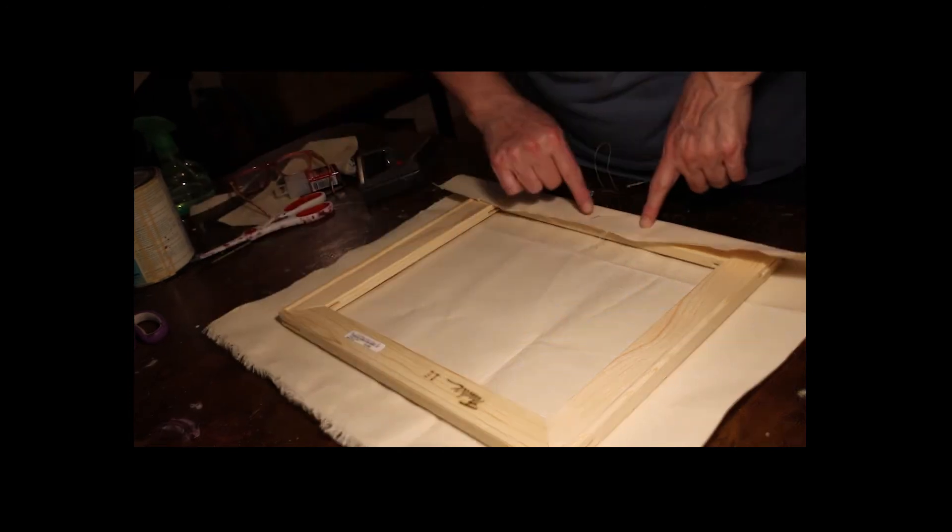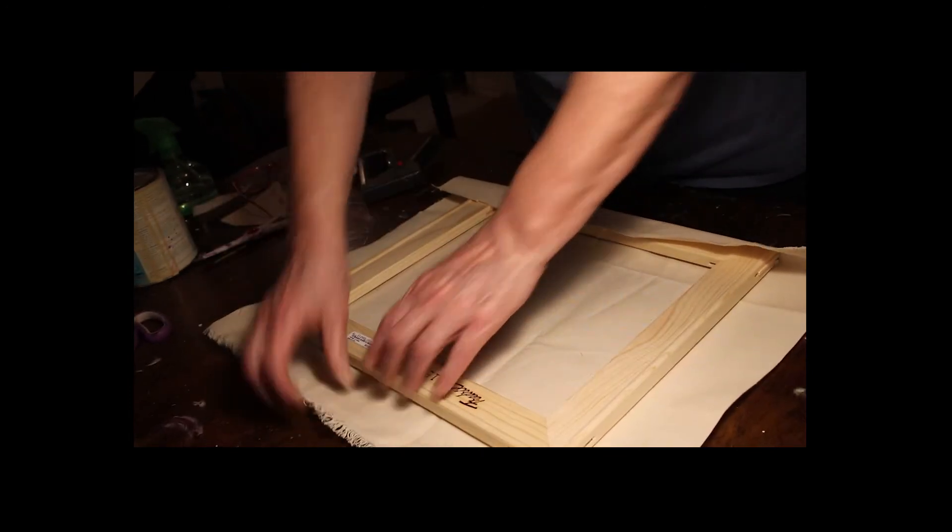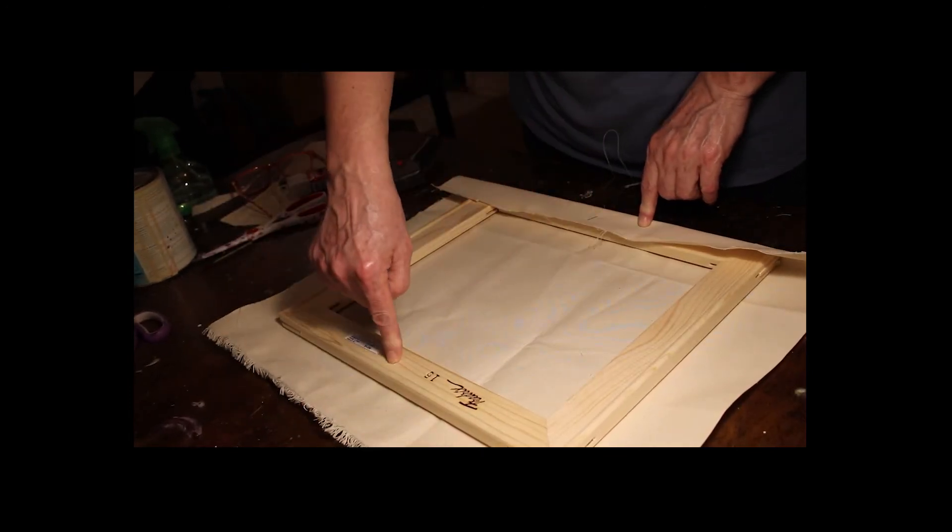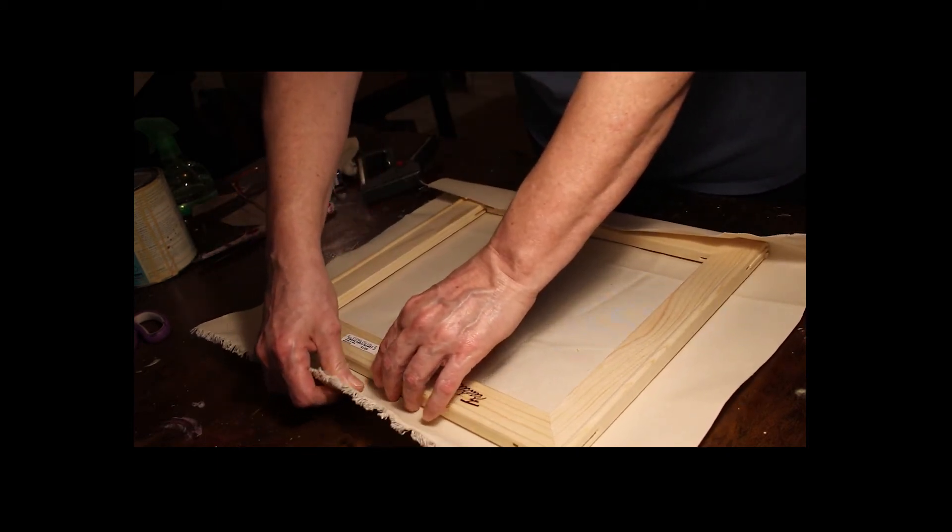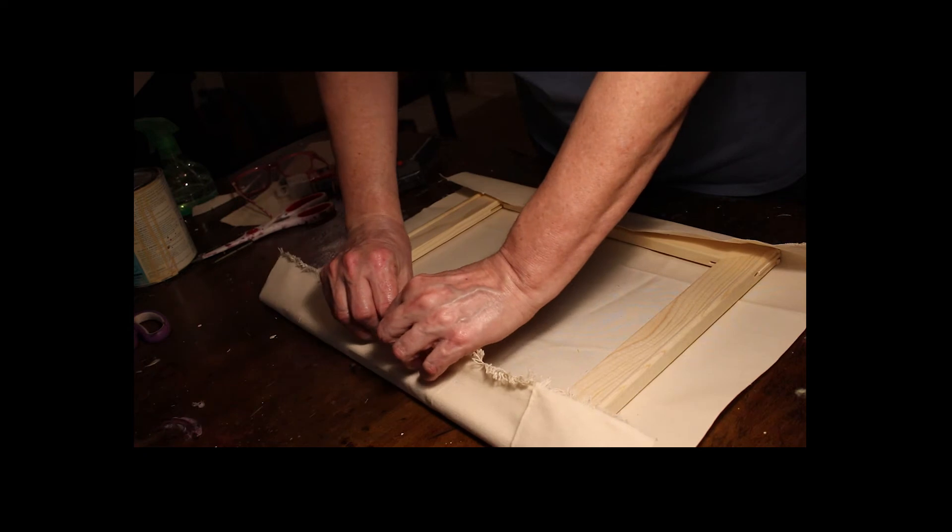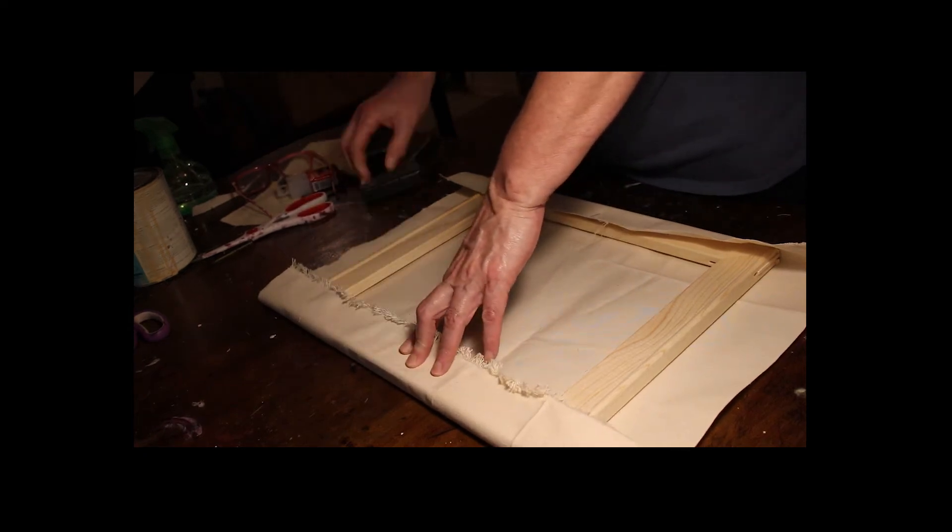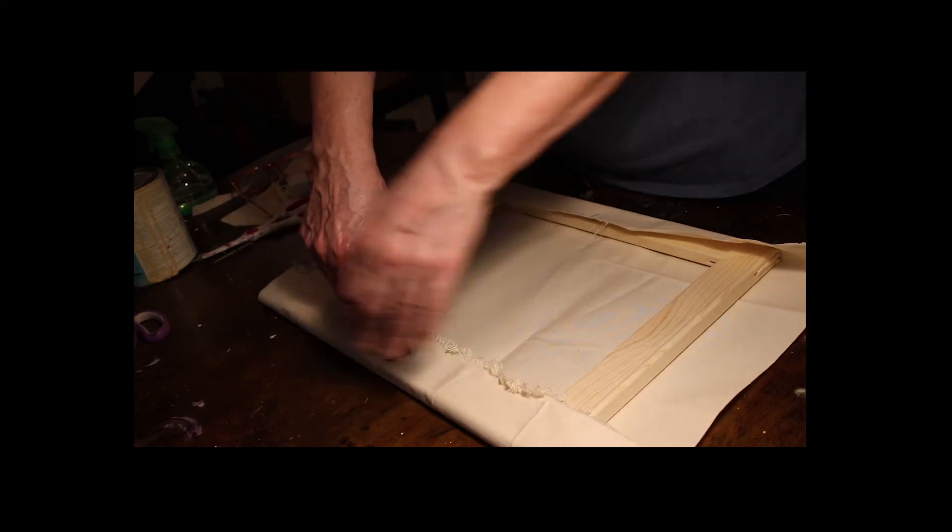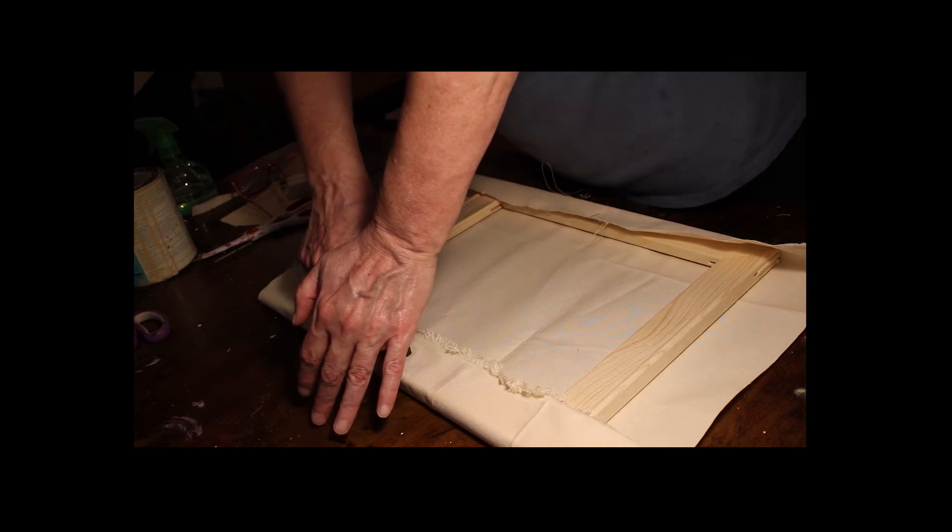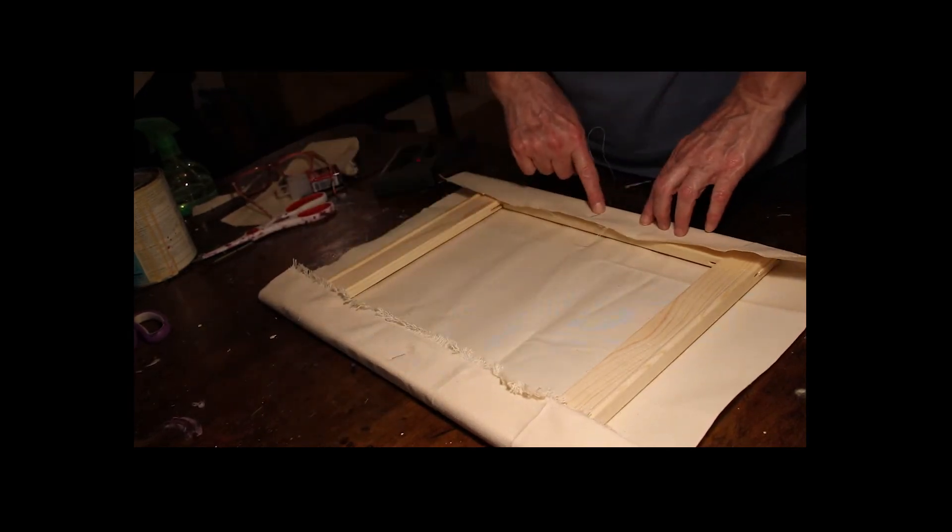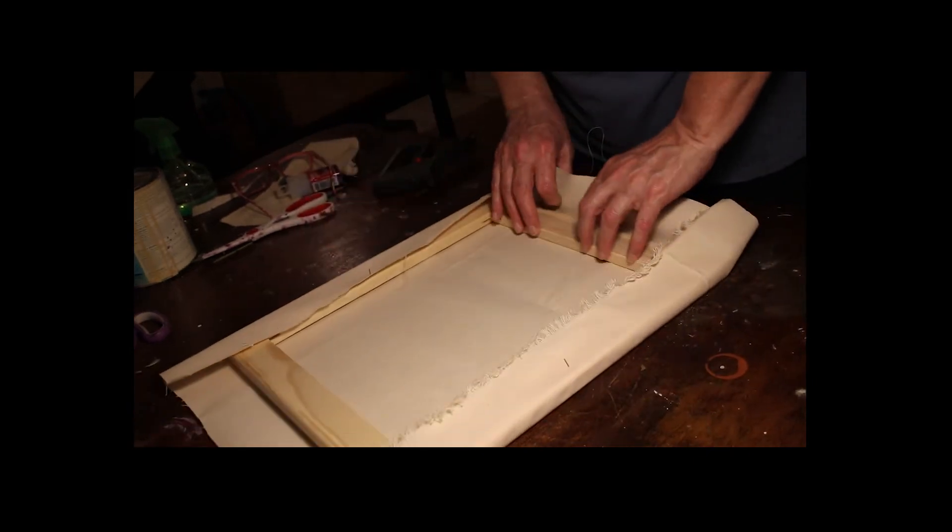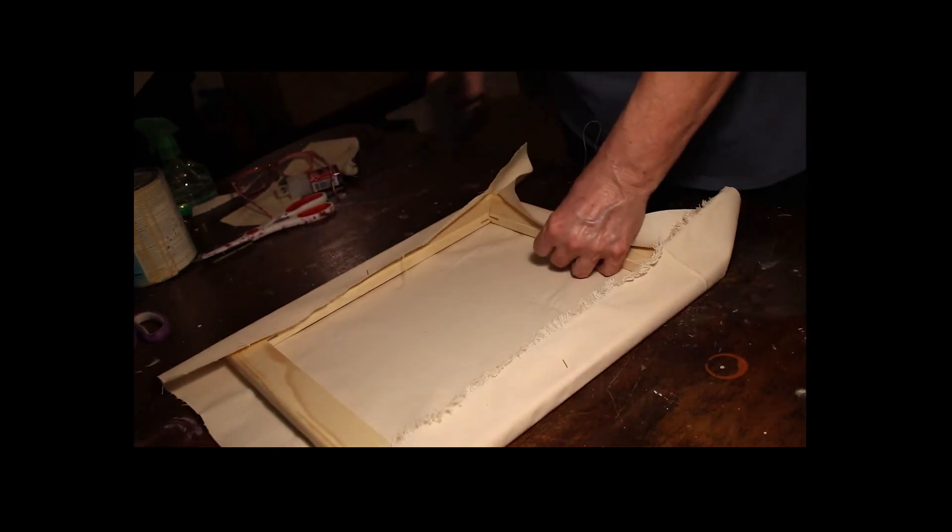When you stretch it, you're going to stretch the opposite way first. So if you staple over here, you're going to staple one over here on the opposite bar. You don't want to stretch it too tight, just snug. If you stretch it too tight, it'll warp later on. If you stretch it too loose, then it won't tighten enough. There's one and there's one. Now I'm going to come along to this side.